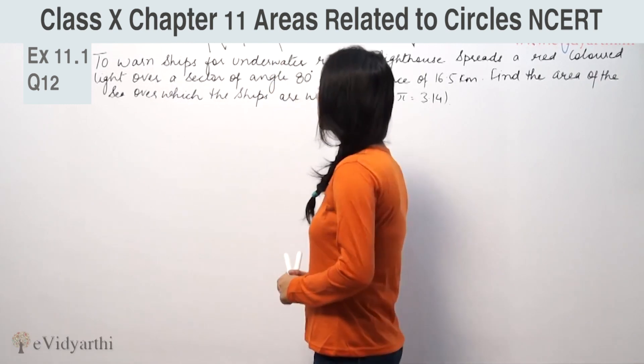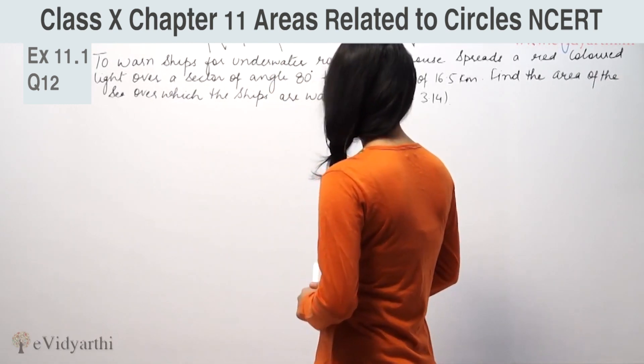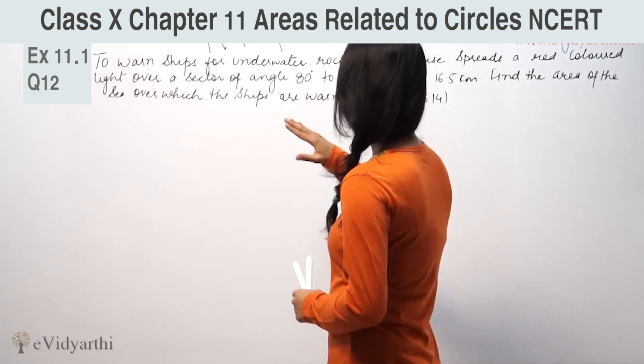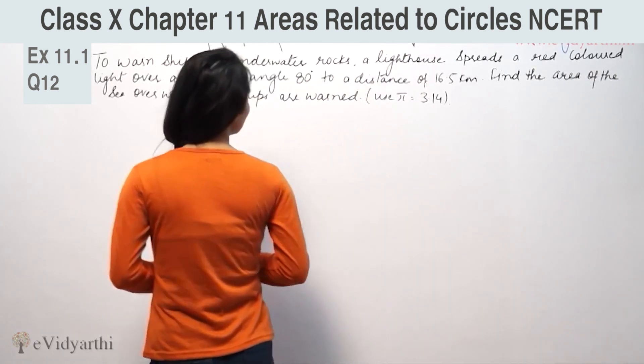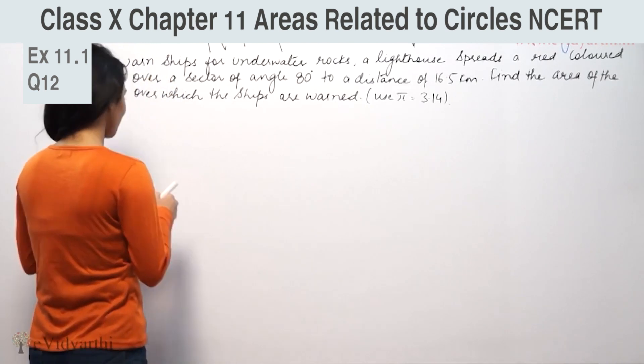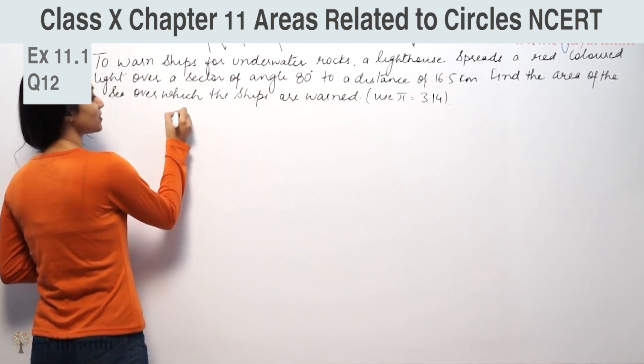This says: to warn ships for underwater rocks, a lighthouse spreads a red color light over a circle of angle 80 degrees to a distance of 16.5 km. Find the area of sea over which ships are warned.